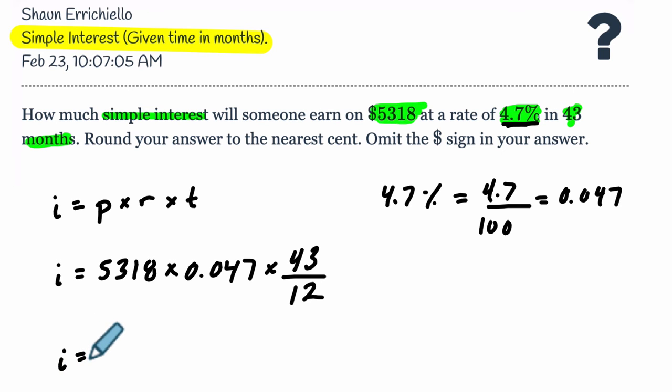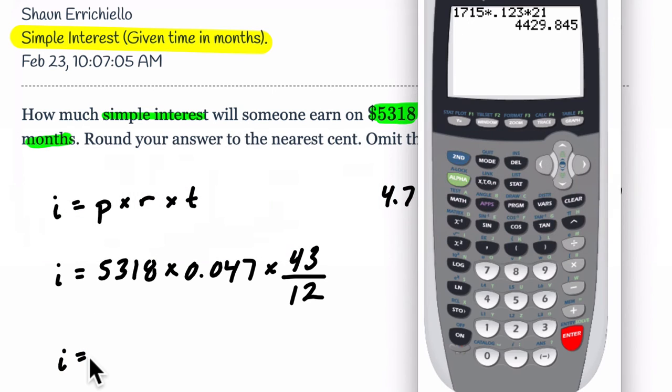Now, in a calculator here, let's pull up a calculator. We're going to do 5318 times 0.047 times, you can enter this fraction directly. I just would add parentheses and type in 43 divided by 12. Here you don't need parentheses technically, but I think it's a good habit to put your fractions in parentheses to keep track of them.